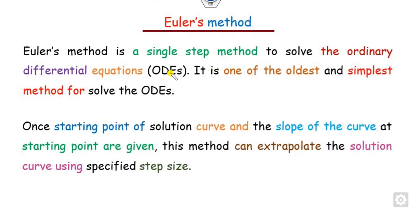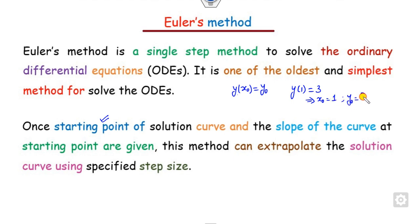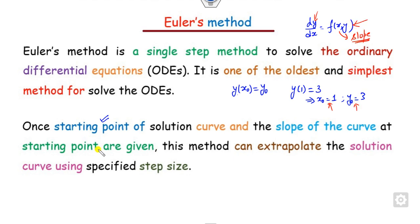In Euler's method, we start with some starting point — that is, the initial point is given to you like the value of y at x0 is y0. For example, y(1) = 3 means x0 = 1 and y0 = 3, so the starting point is (1, 3). Once we take the starting point and the slope of the curve — since dy/dx is f(x, y), this means f(x, y) is nothing but the slope of the curve. Once you know x0 and y0, you substitute those values to get the initial slope. Then this method explores the solution using various step sizes.